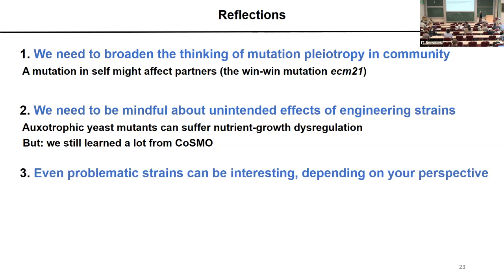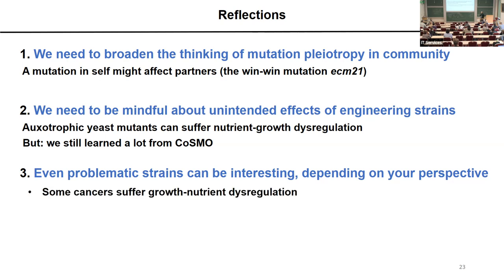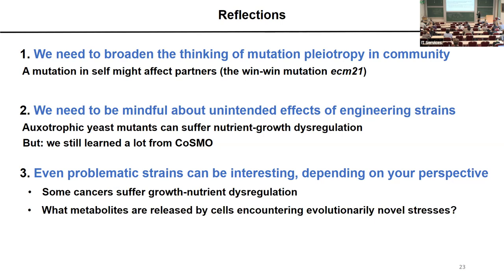Even problematic strains like these auxotrophic mutants can be interesting depending on perspective. For a while we were really worried we had spent years studying an artifact of nutrient-growth dysregulation. But upon looking into the literature, it turns out this phenomenon is conserved throughout all eukaryotes, and cancer cells also suffer this nutrient-growth dysregulation. So we can spin the story to ask: how might growth in nutrient-growth dysregulated cells evolve? These kinds of phenomena raise new questions — like what metabolites could be released if cells encounter a novel stress, and what new metabolic interactions could arise as a consequence.